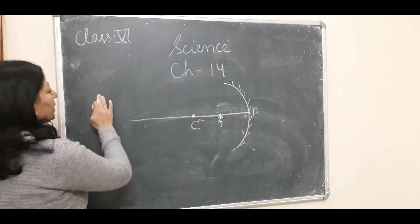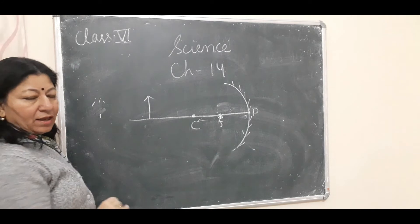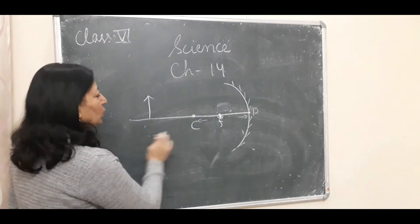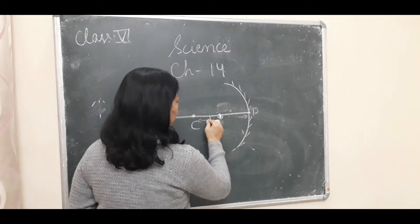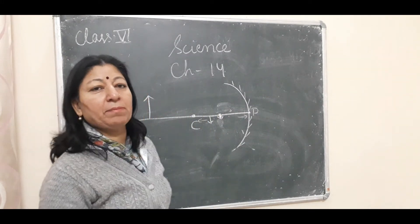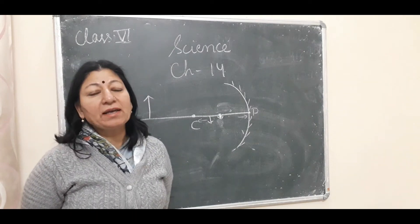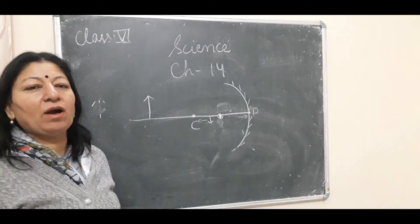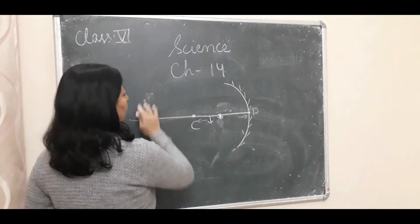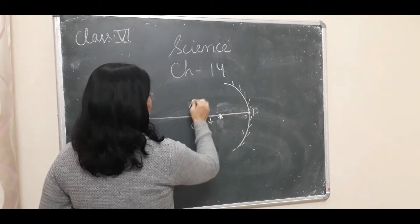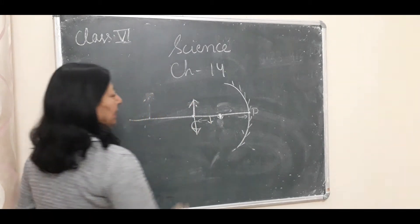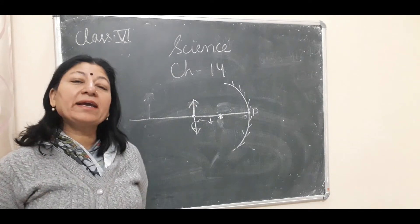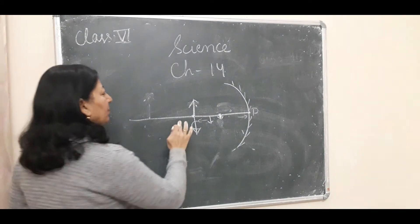When the object is placed at the center of curvature, the image also forms at the center of curvature. The image is the same size as the object, real, and inverted.